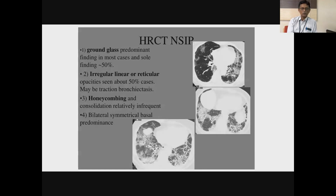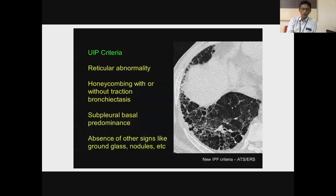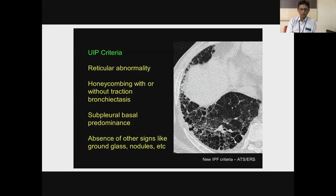In UIP, there is a predominantly reticular abnormality, with honeycombing and traction bronchiectasis that may or may not be present, with subpleural basal predominance. Generally, ground glass opacities or nodules are not found in UIP criteria. Previously, differentiation into NSIP and UIP was based on histopathology. But with advances and improved expertise in radiology interpretation, NSIP or UIP is now essentially a radiological diagnosis rather than a biopsy diagnosis, and only the occasional patient may need a biopsy to establish the diagnosis.